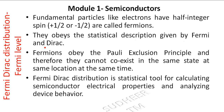The Fermi-Dirac distribution is a statistical tool — a statistical method for calculating semiconductor electrical properties and analyzing device behavior. It is used for semiconductor analysis, electron classification, and as a statistical analysis tool.